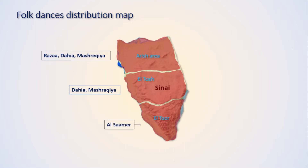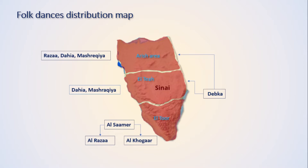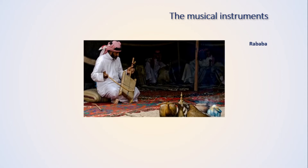In South Sinai we have Al-Samar, which consists of Al-Khugr, and of course Al-Raz'a. You might be asking yourself: where is the Dabka dance? Dabka dances are in the north and in the middle. Most of you know Dabka, but the rest I think you haven't heard before. During this video I will explain much more about all these different types of dances. The musical instruments are also different, and some of them you may already know.